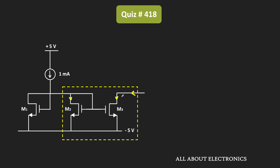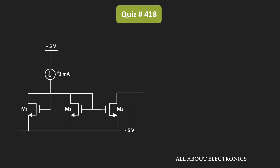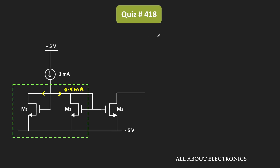Let's say the current through MOSFET M3 is ID3, and the currents through M1 and M2 are ID1 and ID2. Since M2 and M3 form the current mirror, ID3 equals ID2. First we need to find ID2. This 1 mA current is getting divided between MOSFETs M1 and M2. Since M1 and M2 are identical, the current divides equally, so each carries 0.5 mA. Since gate terminal currents are negligible, the drain currents of both MOSFETs equal 0.5 mA — that is, ID1 equals ID2 equals 0.5 mA.